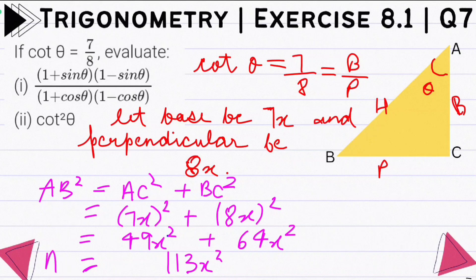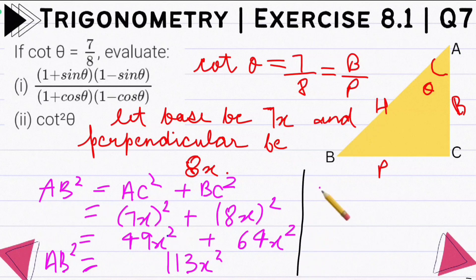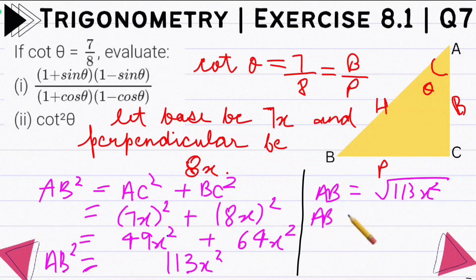So we have AB square, and now AB is equal to the square root of 113x², which gives us root of 113 times x. So this is the AB (hypotenuse) value. Now we can solve these two parts.